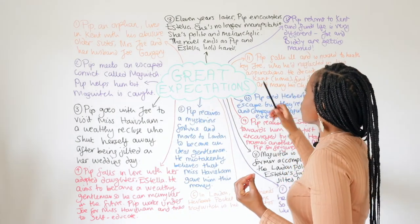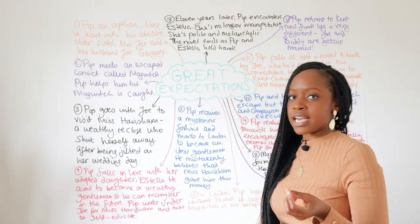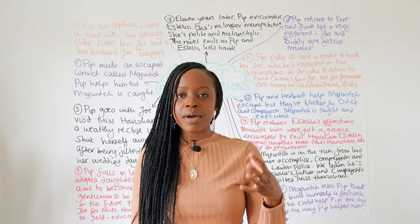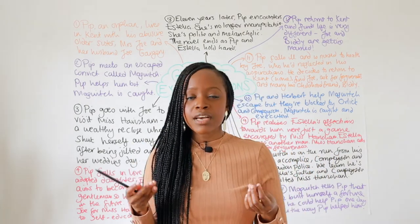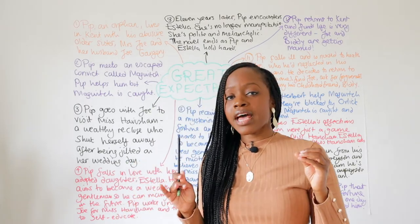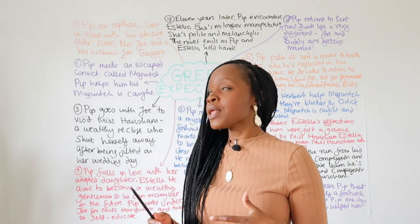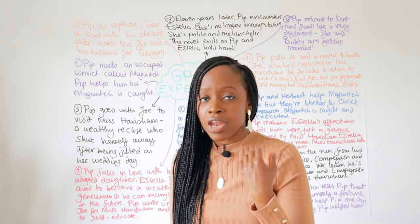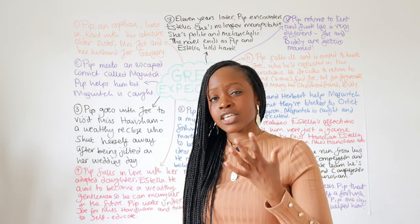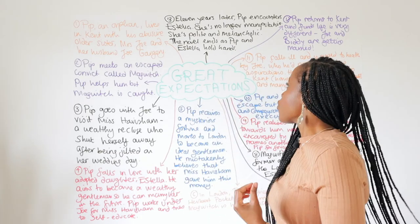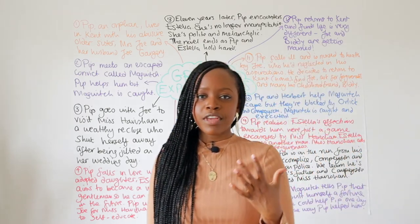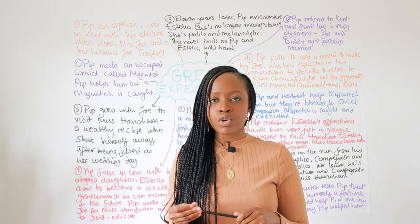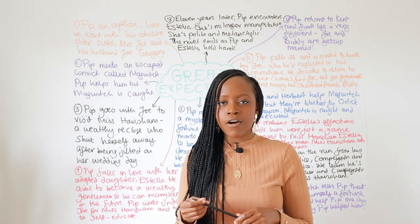Finally, the story ends 11 years later when Pip encounters Estella. He learns that she's no longer manipulative — in fact, the man that she married, who was part of the same social class as her, was a very abusive husband towards her. As a result of this, she's very melancholic. Separately, we learn that she has become really polite and has learned all the wrong things that she has done — she seems to wish to change. She is also seen to have actually fallen for Pip. The novel thus ends as Pip and Estella hold hands, and we get the sense that maybe there's some kind of promise and positivity that will result from both Pip and Estella reuniting after 11 years.